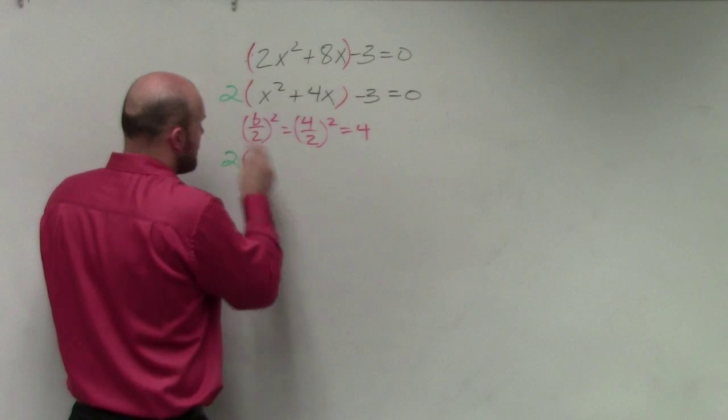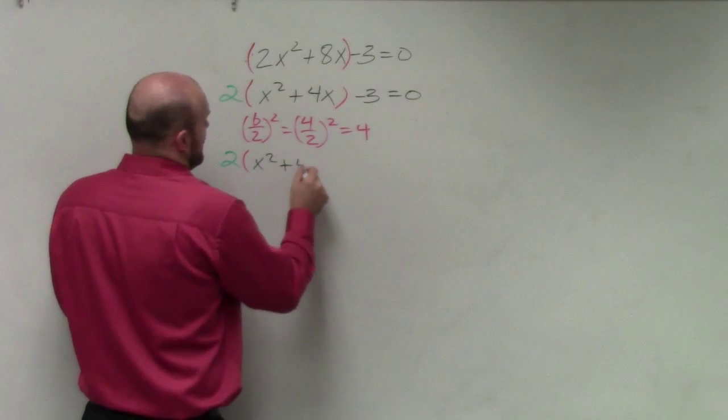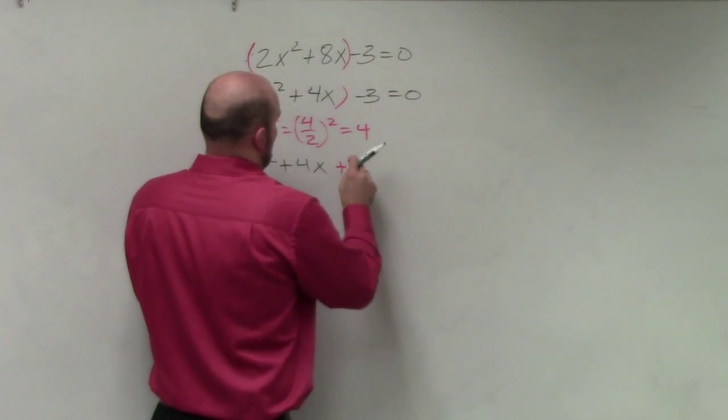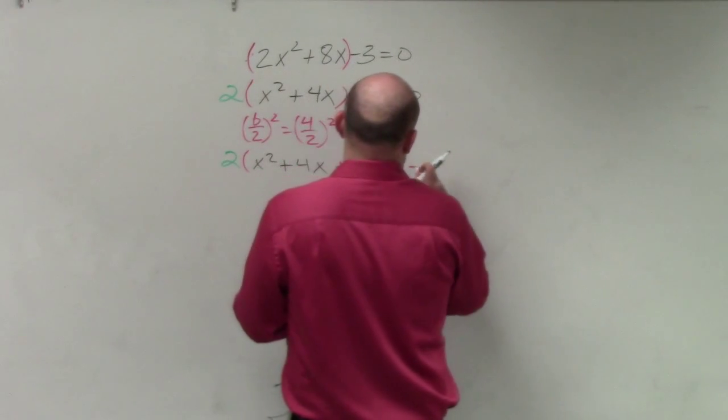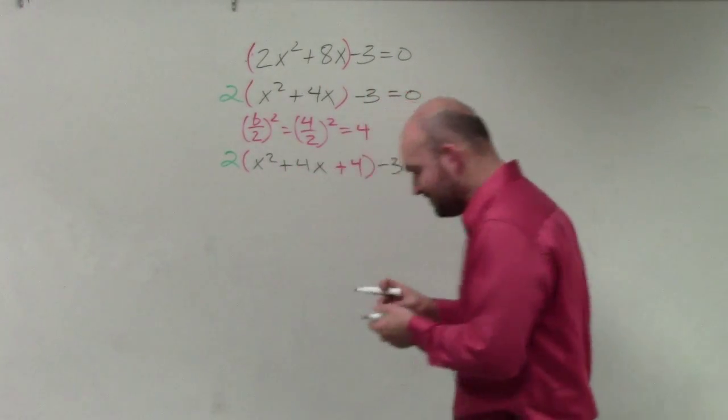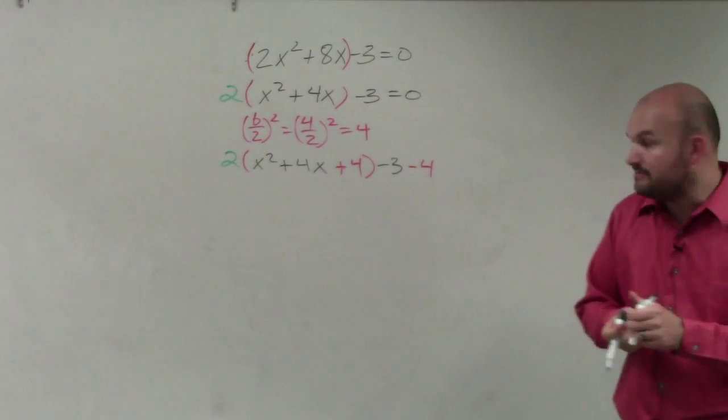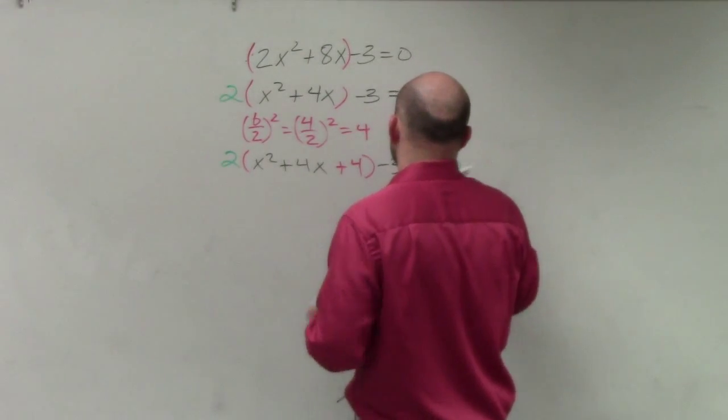So we have our 2. Then we have x squared plus 4x plus 4 minus 3 minus 4. And then what is difficult about this one, the main mistake that students make is they forget to multiply this by 2.